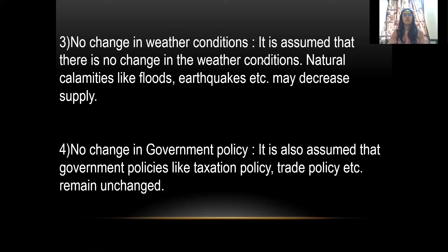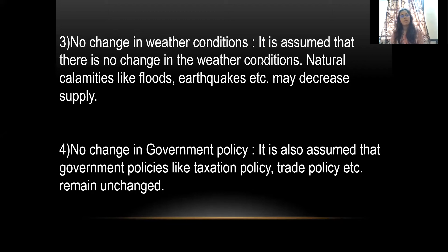The third assumption is no change in weather condition. As we all know, the supply of agricultural commodities totally depends upon weather conditions. If weather is good, we get more production, more production leads to more stock, and more stock leads to more supply. But if natural calamities like floods or earthquakes take place, it may affect the supply. So while proving this law, we assume weather conditions remain unchanged.